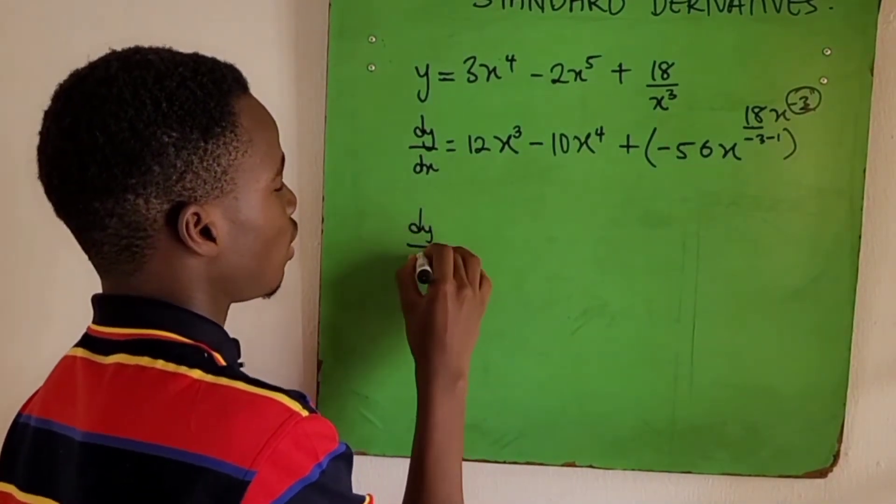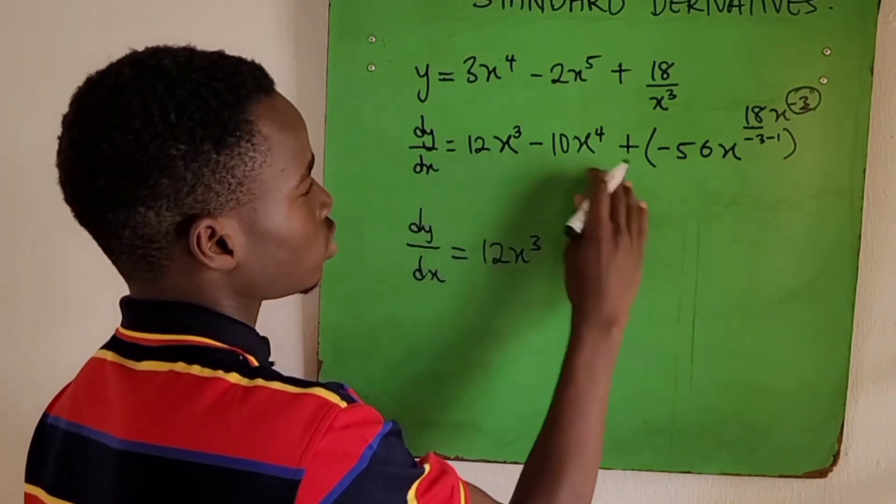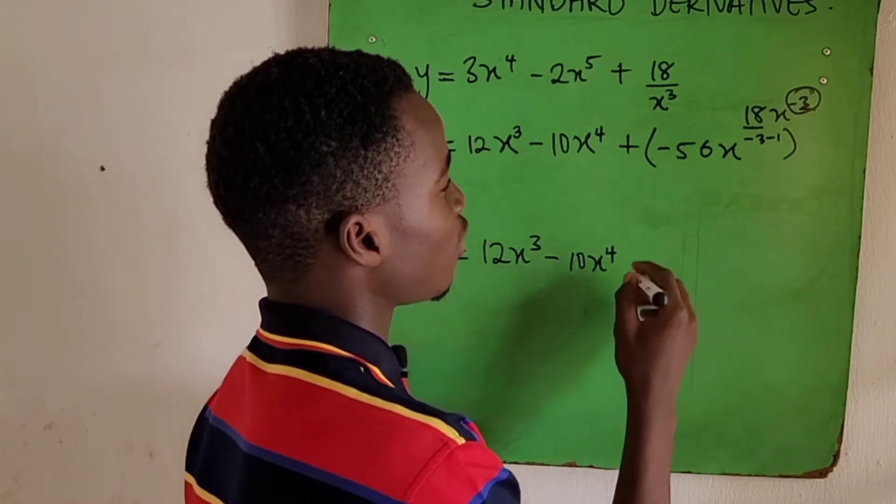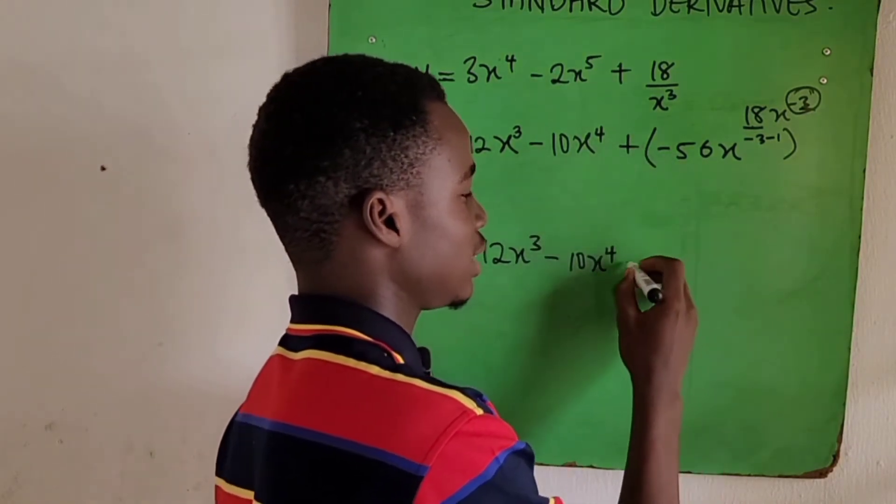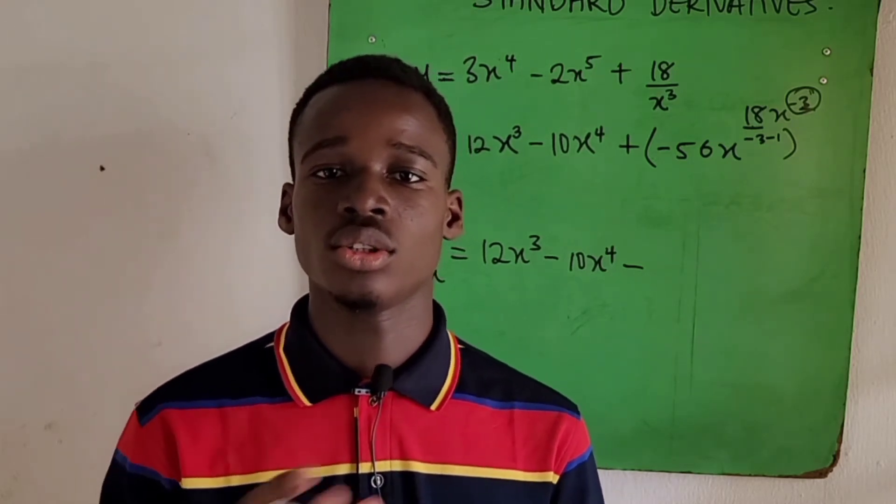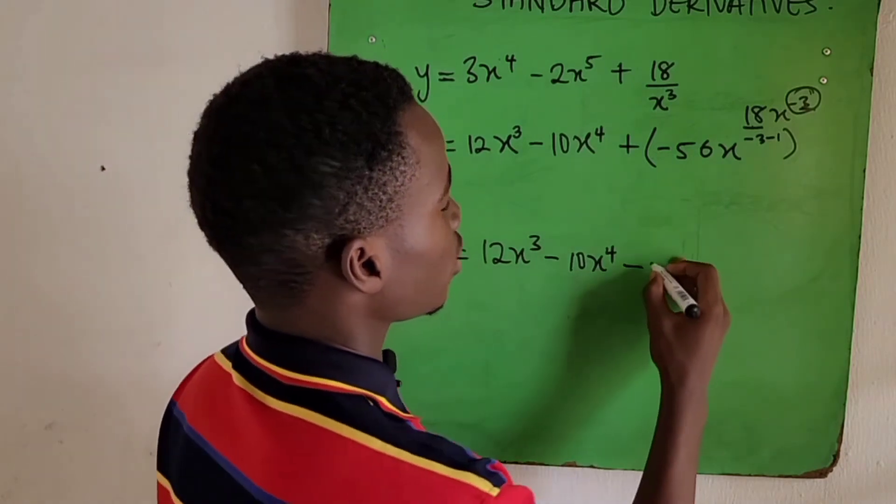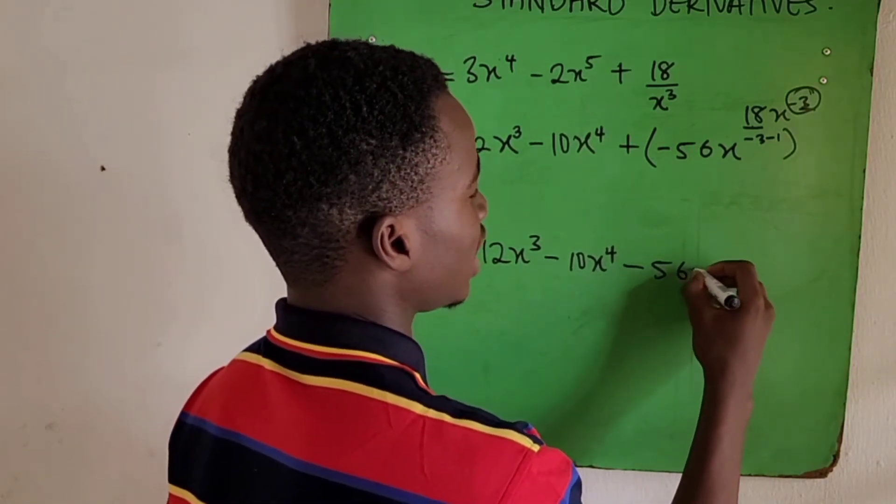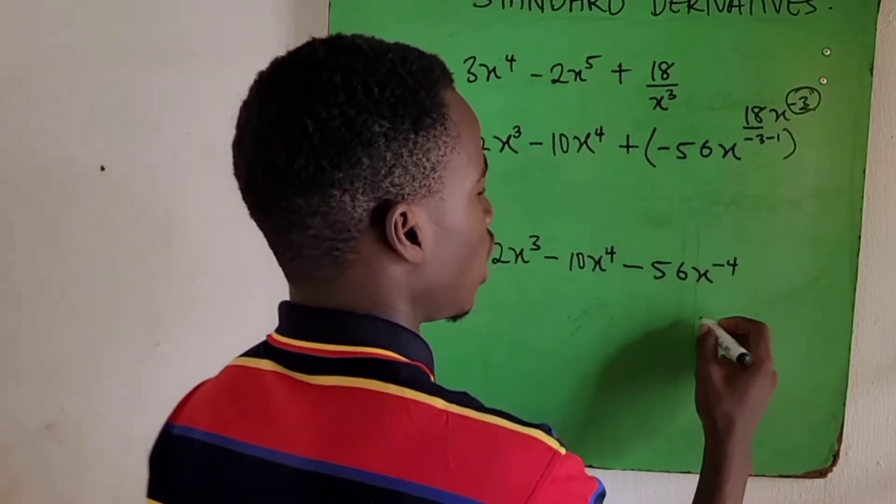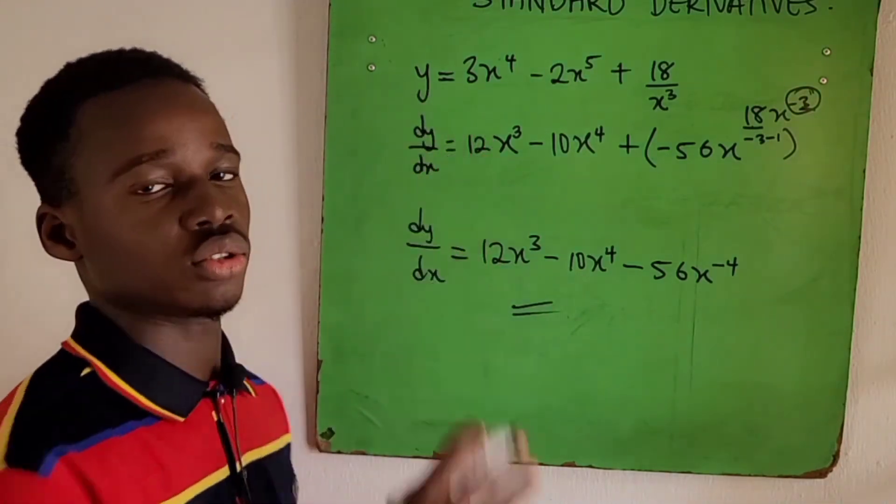Remember it's n minus 1, and our n is minus 3, so n minus 1 gives us minus 3 minus 1. So we have dy/dx: solving for that to be 12x³ plus 10x⁴, then plus times minus is minus. Now minus 3 minus 1 gives us minus 4, so we have minus 54x^(-4). And so this is the derivative of this function.